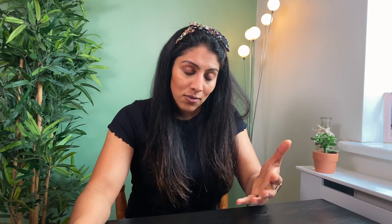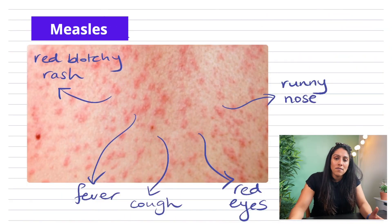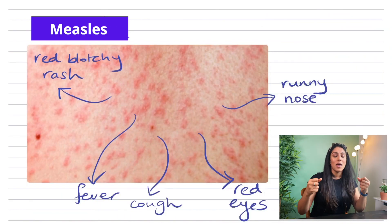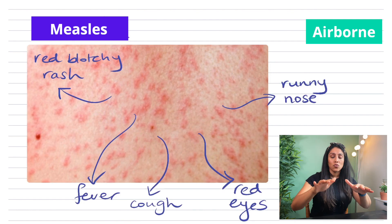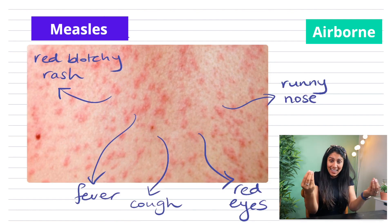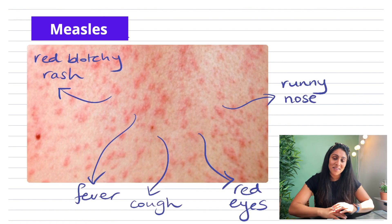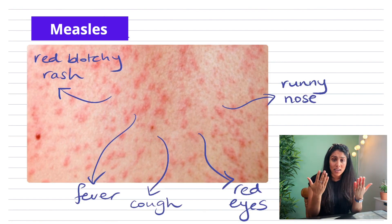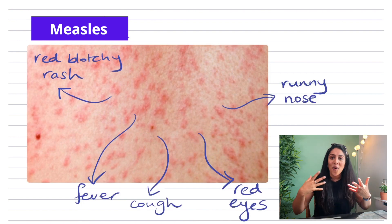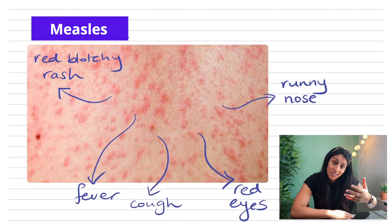There are lots of diseases caused by viruses, and one I'm going to look at is measles. Measles is caused by a virus that is really contagious because it's airborne — it travels through the air and lingers for hours. Some symptoms you could get from measles include a runny nose, red eyes, a cough, a fever, or red blotchy rashes, and this could develop into something a lot more severe.